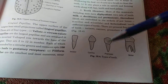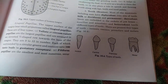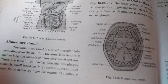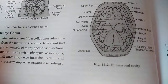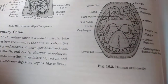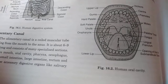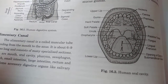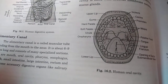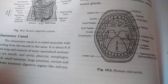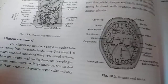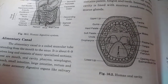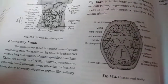In the buccal cavity, the main roles are carried out by the tongue, teeth, and salivary glands. Saliva moistens the food and contains an enzyme called ptyalin, which converts starch into maltose and then to glucose. This means carbohydrate digestion starts from the very beginning in the mouth due to the enzyme ptyalin present in saliva.